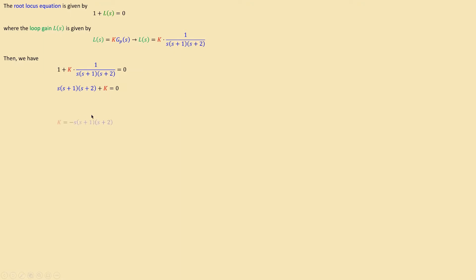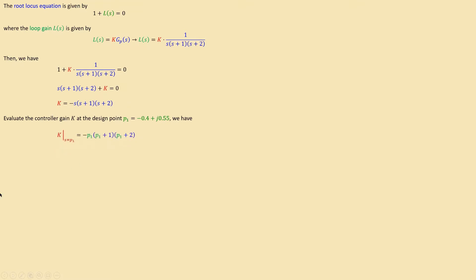Isolating k gives: k = −s(s+1)(s+2). We evaluate the magnitude of k at the design point p1 = −0.4 + j·0.55 by substituting s = p1. This yields the following terms: the first term gives −0.4 + j·0.55, the second term gives 0.6 + j·0.55, and the third term follows a similar complex form.